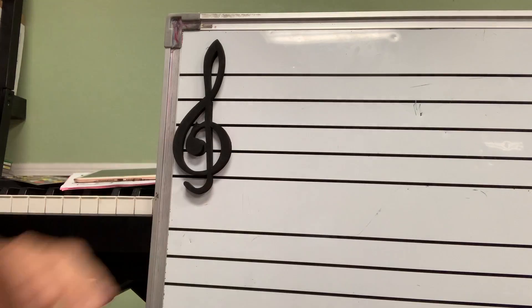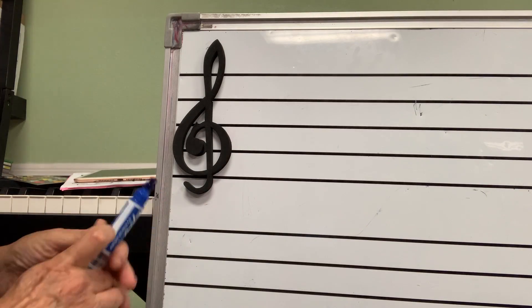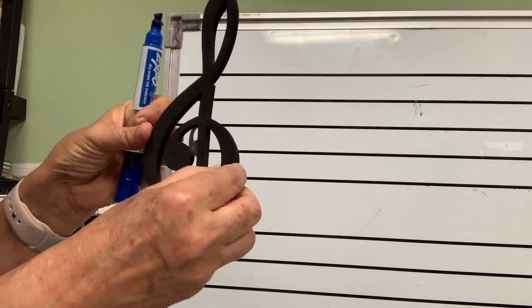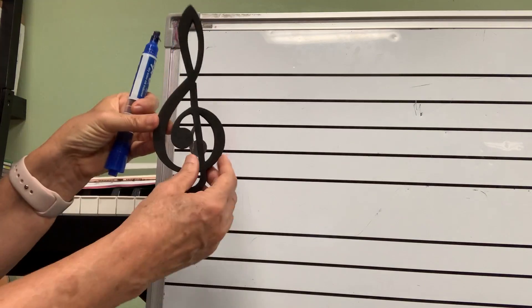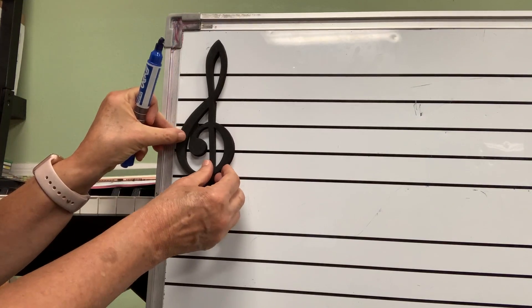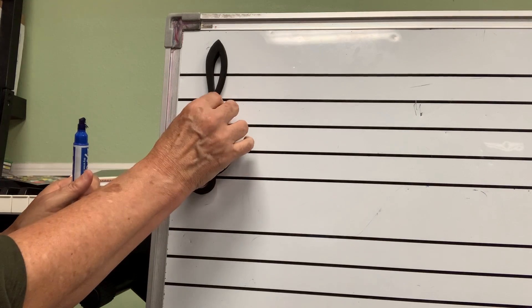These lines are called staff. And at the beginning, we have this beautiful thingy. See how pretty it is? It's called a treble clef. Can you say treble clef?